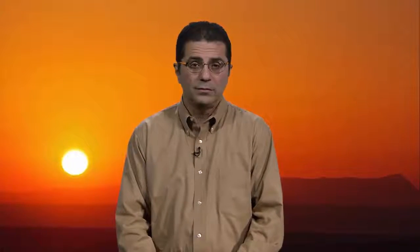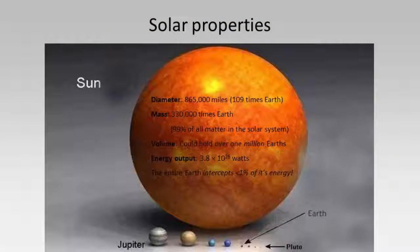Let's start with a few facts and figures to give you an idea of what the Sun is like. In a word, it's enormous. A diagram shows the Sun is over 800,000 miles in diameter — well over a hundred times the size of our Earth. The mass of the Sun is well over 300,000 times that of Earth, and the volume of the Sun could hold a million Earths.